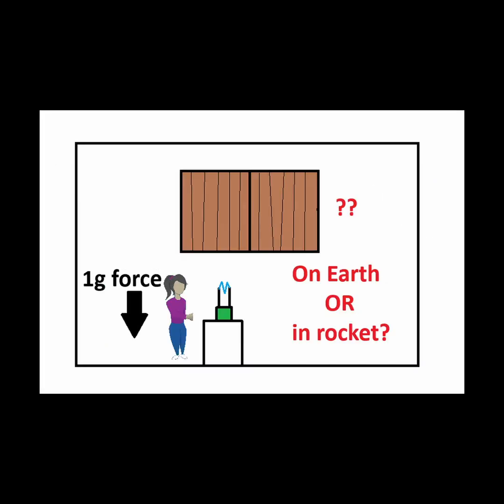So this means that if you were in a room without windows, experiencing a typical 1g force of gravity like on Earth, there'd be no way to tell if you were actually at rest on Earth or if you were inside a rocket ship that is accelerating at a rate to produce 1g of force.